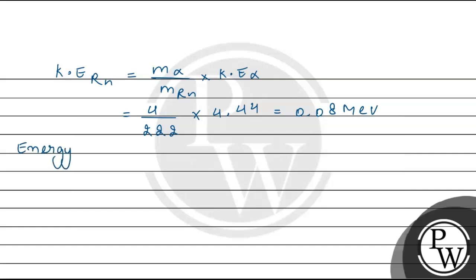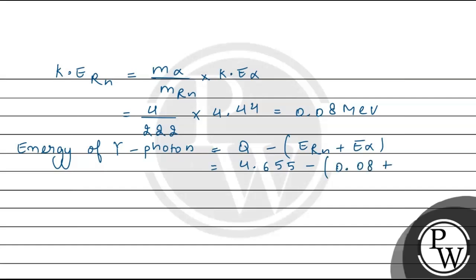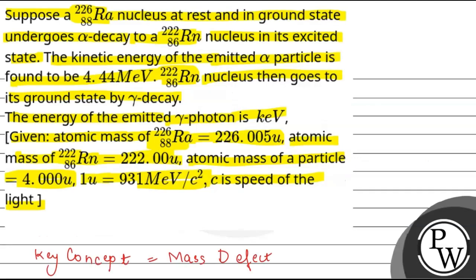The energy of the gamma photon equals the Q-value minus the kinetic energy of radon minus the kinetic energy of the alpha particle: 4.655 minus 0.08 minus 4.44 = 0.135 MeV, which equals 135 keV. So 135 keV is the correct answer. Hope you understood it well, best of luck.